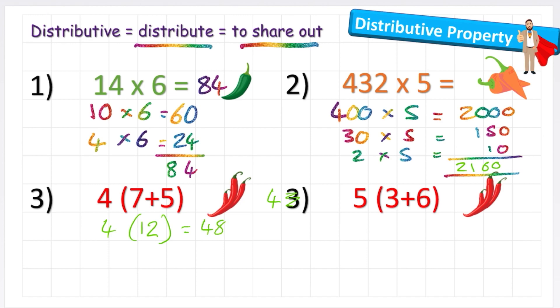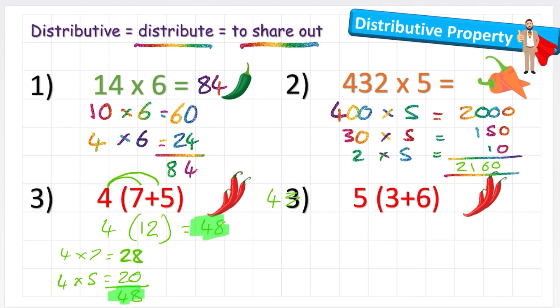Or I can use my new distributive property. And I can understand that in order to do this, I can distribute the 4 and multiply it by the 7. So 4 times 7 is 28. And 4 times 5 is 20. Add these two together, gives me a total of 48. And what you'll notice is it's the same answer in both of those.